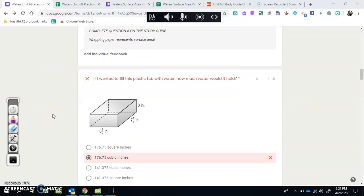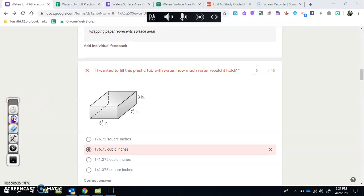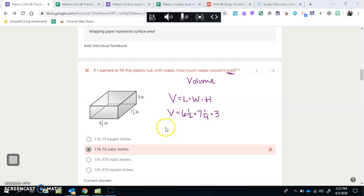Next one. If I wanted to fill this plastic tub with water, how much water would it hold? It's asking how much it would hold - that's going to be volume. So for volume, we know that's length times width times height. The length is six and a half, the width is seven and a fourth, and the height is three. Before we can multiply mixed numbers together, we have to change them to improper fractions.